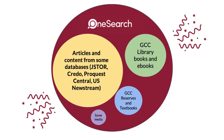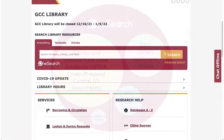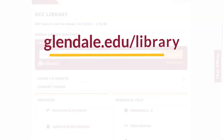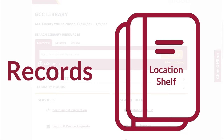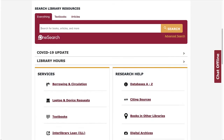OneSearch is a tool you can use to search for and locate the library's physical resources and most of our online resources all in one place. To access OneSearch, navigate to the library's homepage. OneSearch contains records that describe the content of the library's collection as well as where you can find items either online or on the shelf in the library.